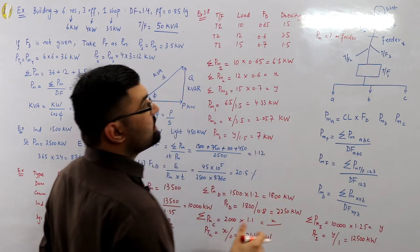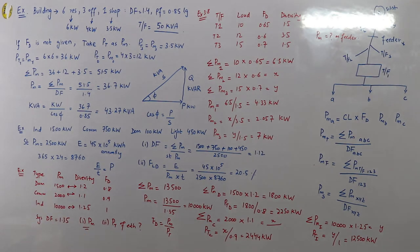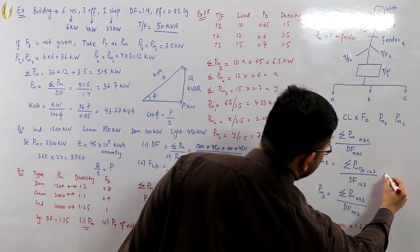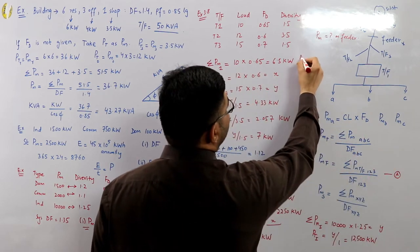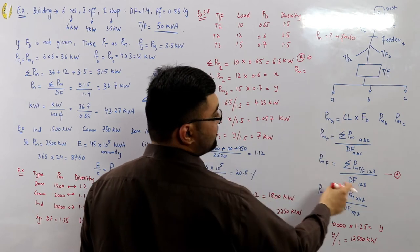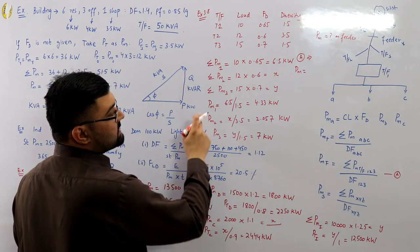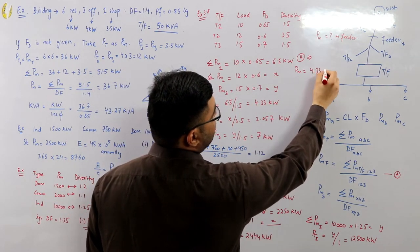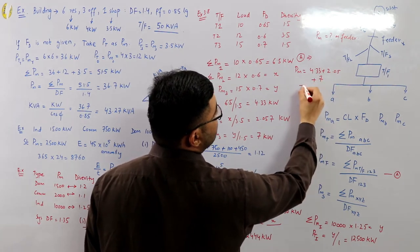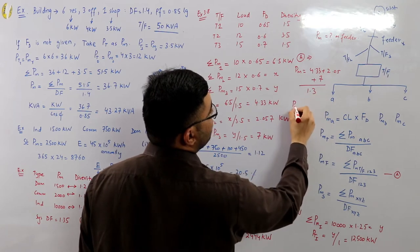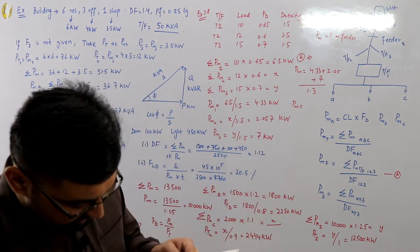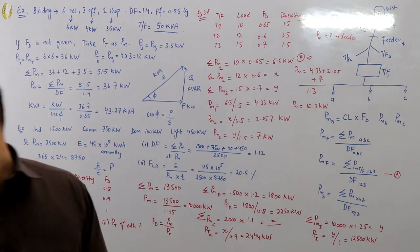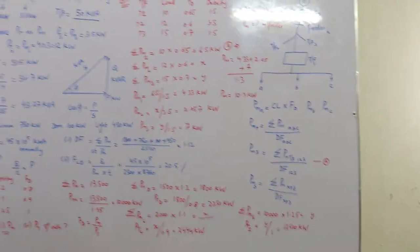Maximum demand on the feeder = (sum of individual transformer maximum demands) ÷ diversity factor among transformers = (4.33 + 2.057 + 7) ÷ 1.3 = 10.3 kilowatts. That is the answer for Example 3.8.